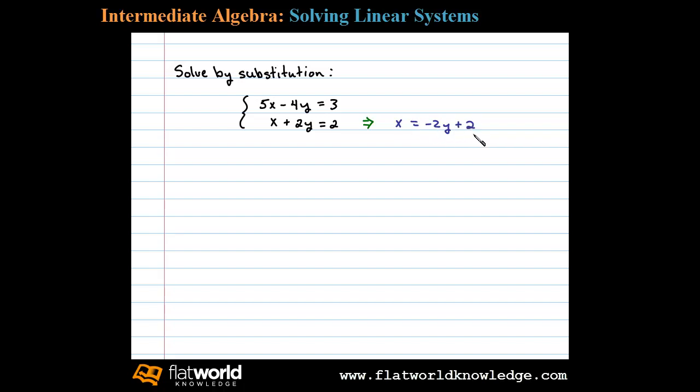Now we'll take this expression and substitute it in for x into the first equation. That'll leave us with 5 times x minus 4 times y equals 3. Instead of x we'll substitute negative 2y plus 2. This leaves us with an equation with one variable we can solve for y.